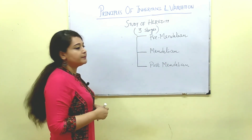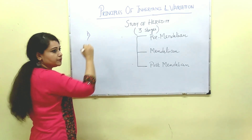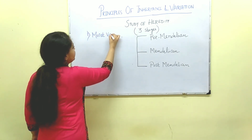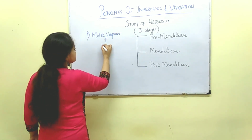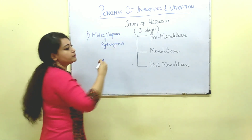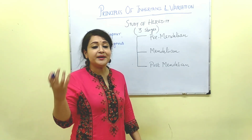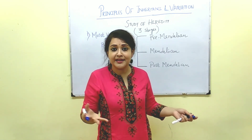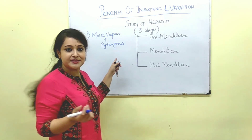Pre-Mendelian era means before Mendel started his experiments. In the pre-Mendelian era, the first concept was a theory known as the moist vapour theory, and it was proposed by the scientist Pythagoras. His concept was that every body part produces vapour, and those vapours aggregate and give rise to a new individual.